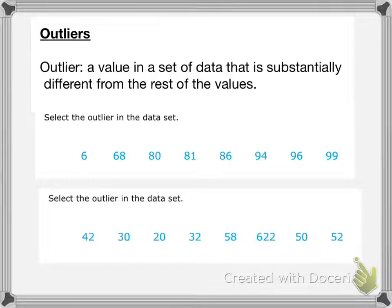So I have two examples here. Let's take a look at the first one. We want to select the outlier in the data set. So you see we have a 6 and then 68, 80, 81, 86, 94, 96, and 99. 6 is really far away from the rest of the data. So that is our outlier.